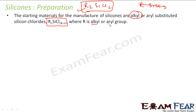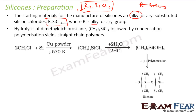When R is an alkyl or aryl group — methyl, ethyl, or aryl — it has to be in this form. That is the starting material. To prepare this starting material, you take CH3Cl, add silicon with copper powder as a catalyst at 570 Kelvin, and you get this product.